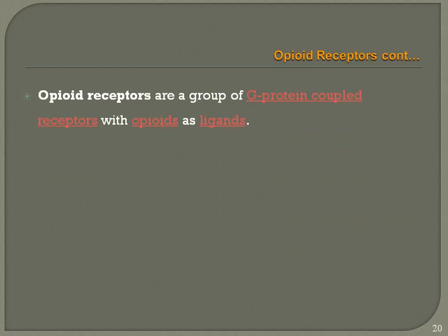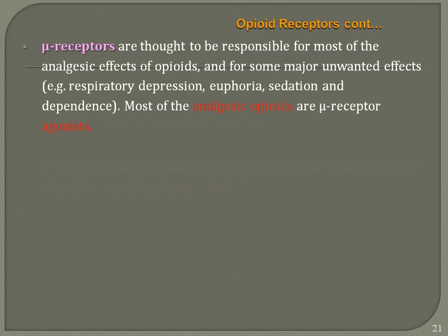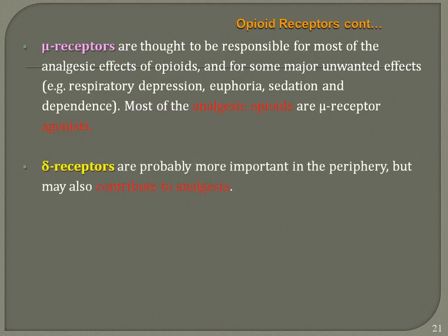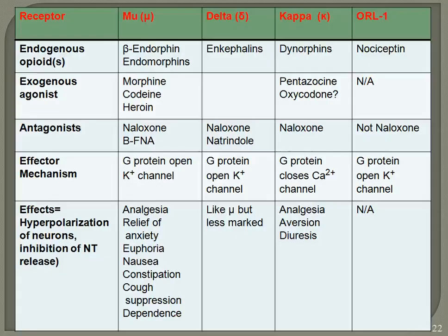Opioid receptors are G-protein coupled receptors that use opioids as ligands. They are divided into three types: mu receptors, responsible for most of the analgesic effects; delta receptors, more important in the periphery but also contributing to analgesia; and kappa receptors, which contribute to analgesia at the spinal level and may cause sedation and dysphoria but produce relatively few unwanted effects.